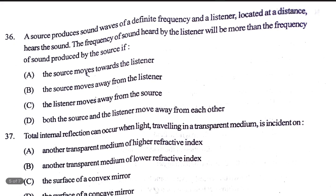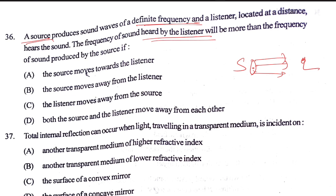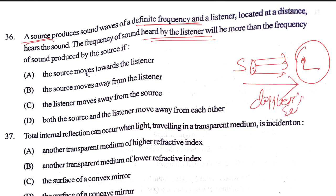A source produces sound waves of definite frequency. A listener is located at a distance. The frequency of sound heard by the listener will be more when the source moves toward the listener — this is the Doppler effect. When the source moves toward the listener, or the listener moves toward the source, frequency increases. When both source and listener move away, frequency decreases.